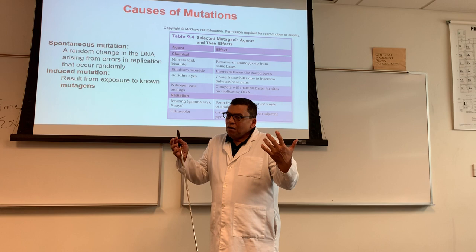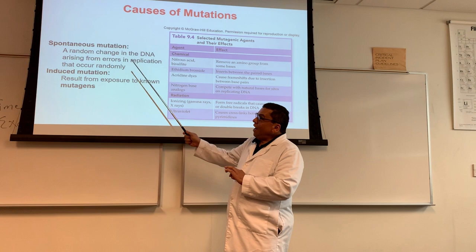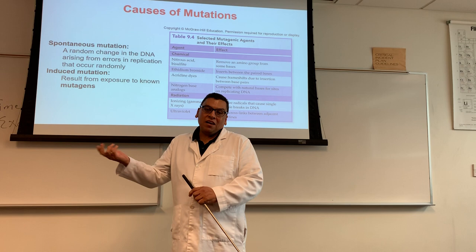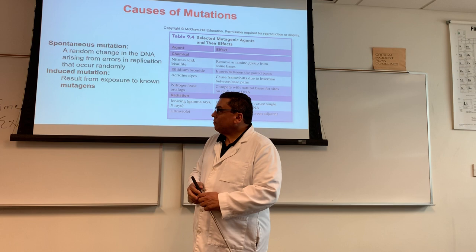Nobody's perfect. DNA polymerase 3 is pretty good at what it does, but once in a while it does make a mistake that it does not correct. That is called a spontaneous mutation, typically happening during DNA replication — caused by a mistake by DNA polymerase 3.